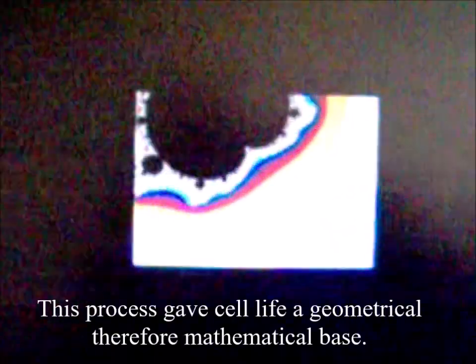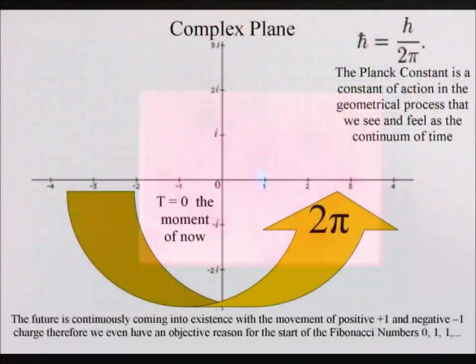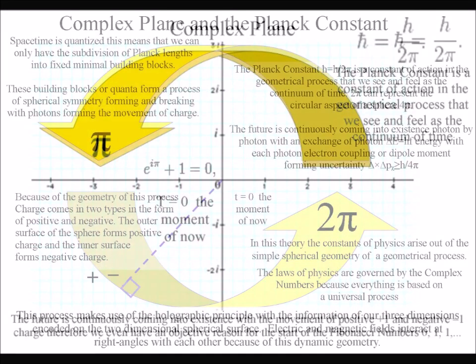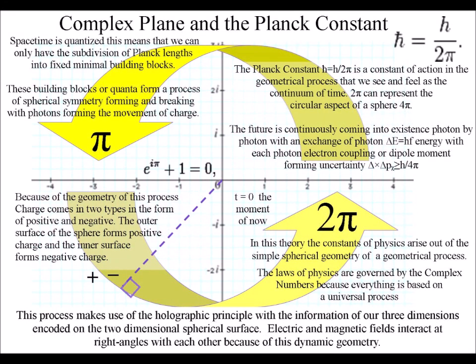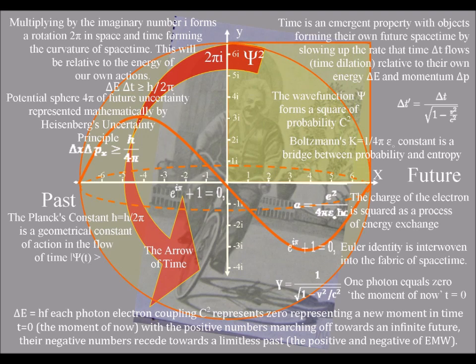This has gauge symmetry. We can re-gauge each new light photon at zero, representing a new moment in time, the moment of now, within an individual reference frame. With the positive numbers on the complex plane marching off towards an infinite future, and the negative numbers receding towards the limitless past,